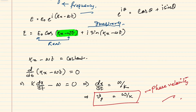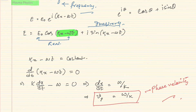Now we are going to find the group velocity. In order to find the group velocity, we have to consider the situation of superposition of two waves — or more than two, but we are going to consider only two waves.